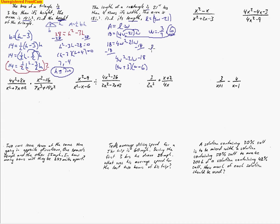Length equals 4 times 6 minus 21, which gives 24 minus 21 equals 3. So 3 inches is the length of our rectangle. You've got to be careful to check which dimension they're asking for.